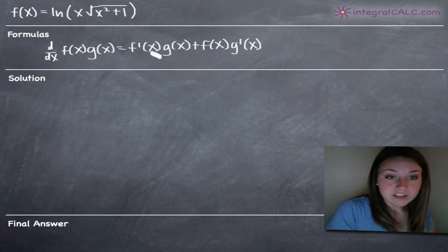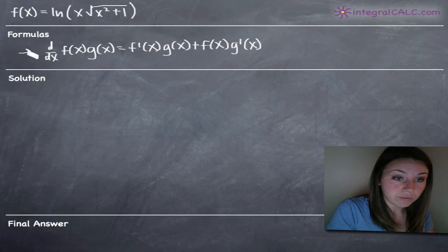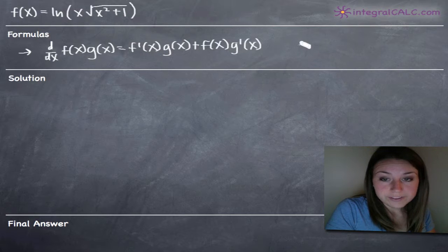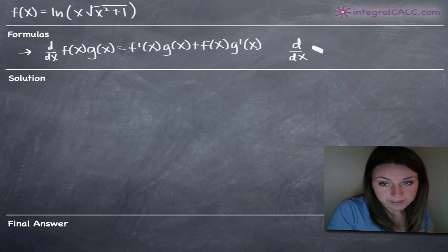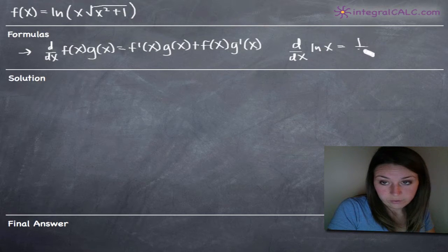In order to take the derivative of this function, we're going to need the product rule formula. We're also going to need the formula that tells us the derivative of the natural log of x, which is 1 over x.